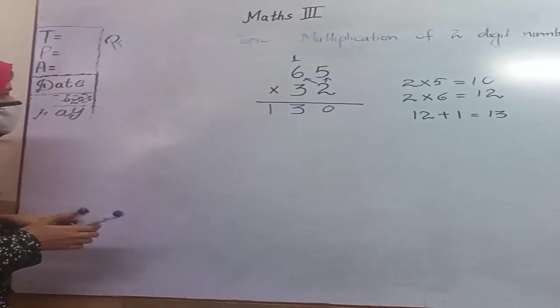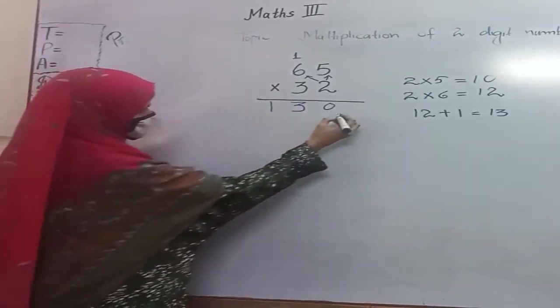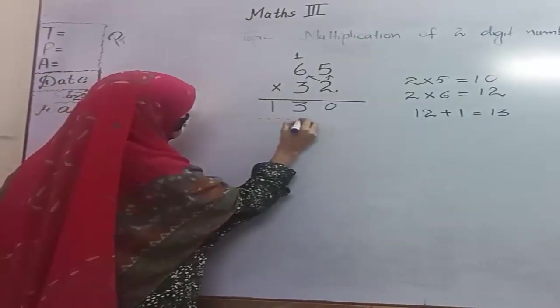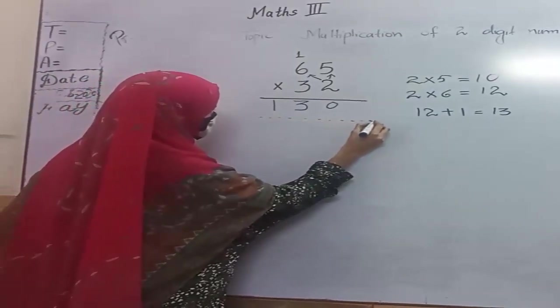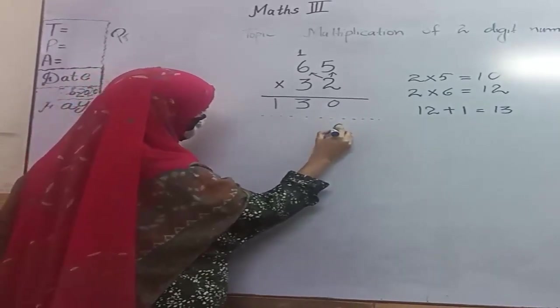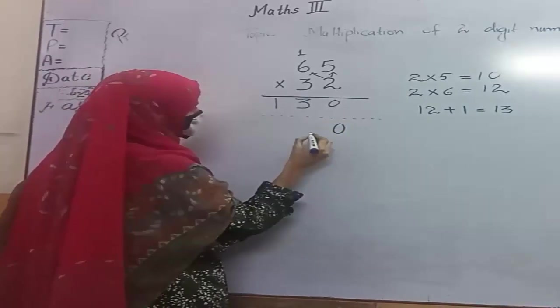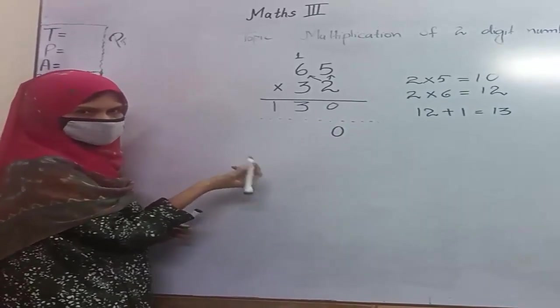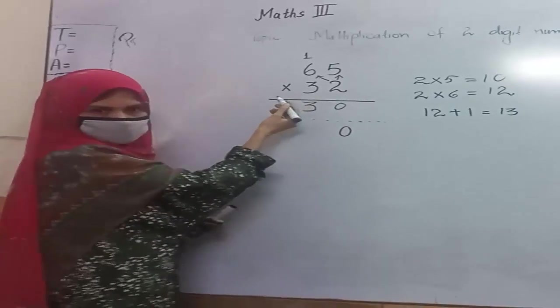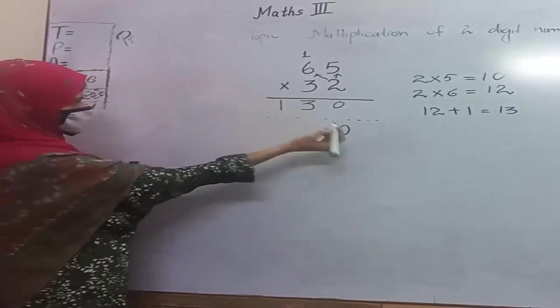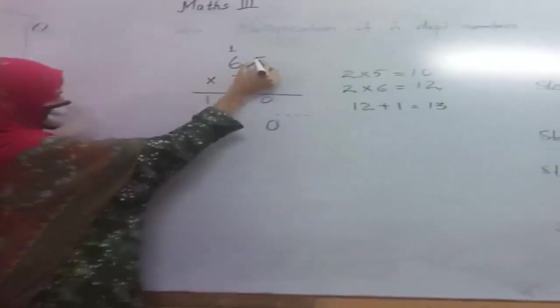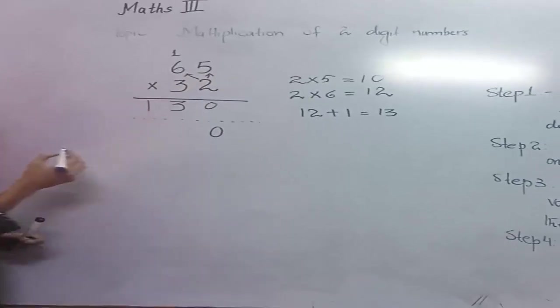Let's start the second step. We place the 0 here. It means we allow the second digit or tens place. 3 multiplied by 5 equals 15.